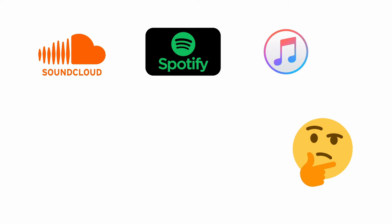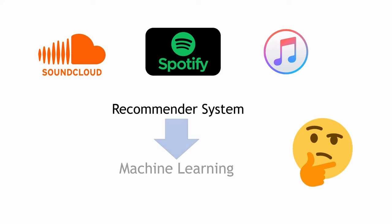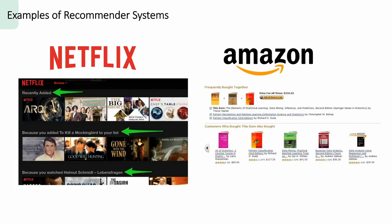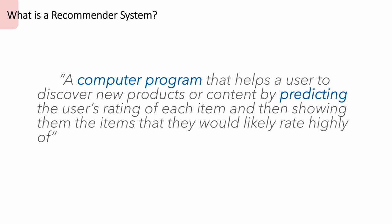Have you ever wondered how music services seem to be able to recommend you songs that seem catered to your tastes and preferences? Well, this is made possible because of recommender systems, which is actually a form of machine learning. In fact, we use recommender systems every day. Some familiar examples would be how Netflix recommends us new shows and how Amazon recommends us products that we might be interested in.